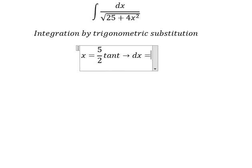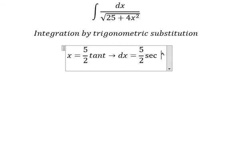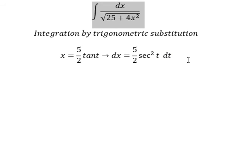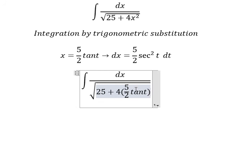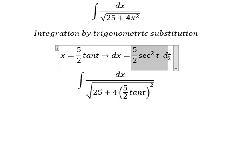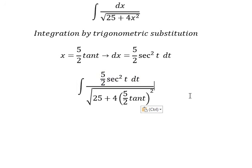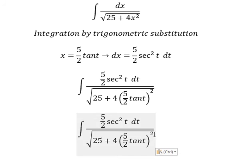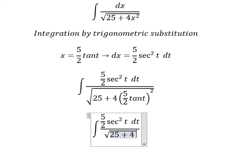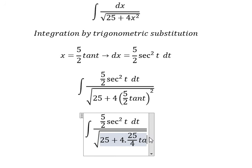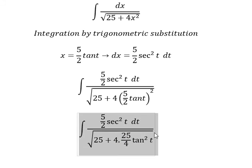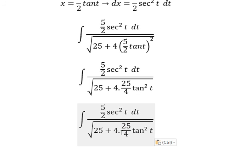Next we find the derivative dx. We substitute this into the integral, so dx becomes five over two secant squared t dt. When we put this in, we get 25 over 4 times tan squared t in the denominator. We can simplify by factoring out 25.